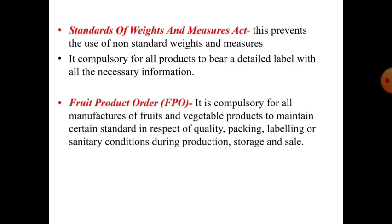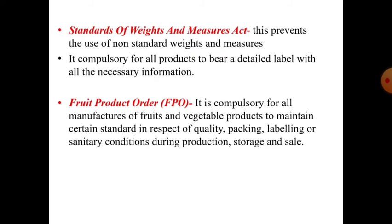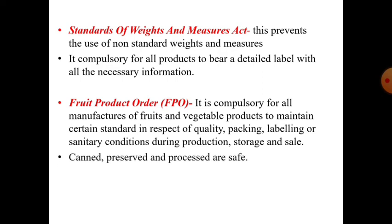Next is the Food Product Order, that is FPO. Under this act it is compulsory for all manufacturers of fruits and vegetable products to maintain certain standards with respect to quality, packing, labeling, or sanitary conditions during production, storage, and sale. It also ensures that canned, preserved, and processed food like pickles, jams, squashes, frozen vegetables, fruits, etc. are safe to be sold in the market.